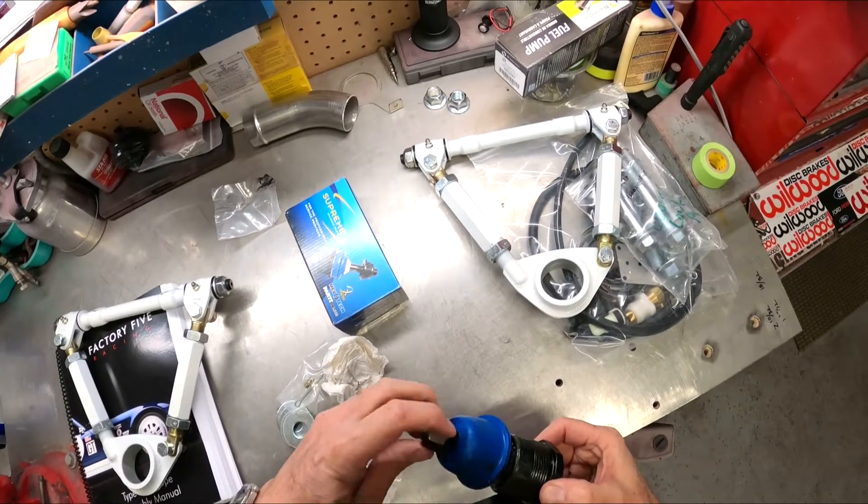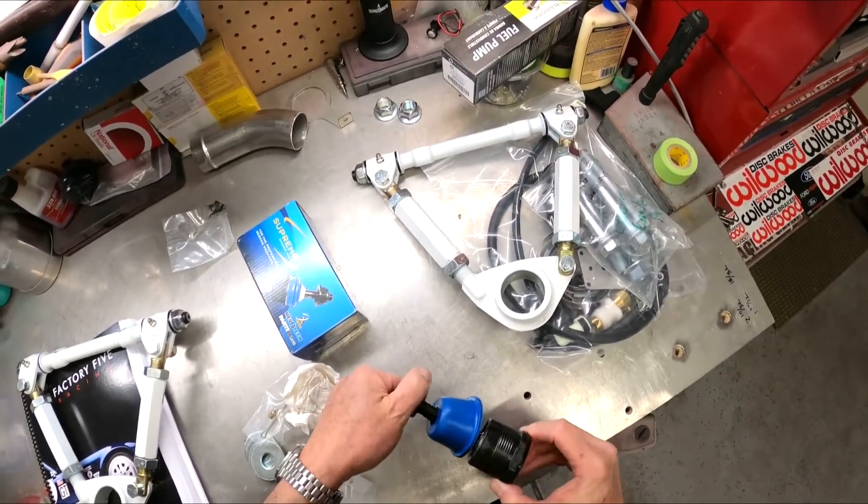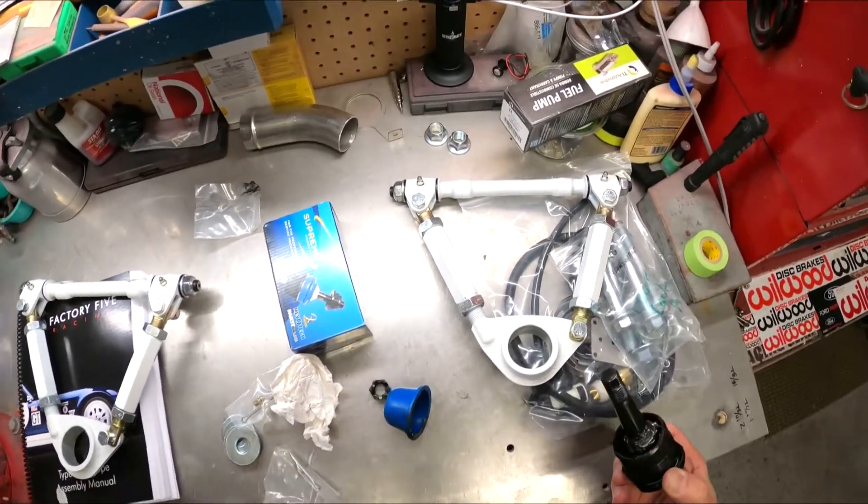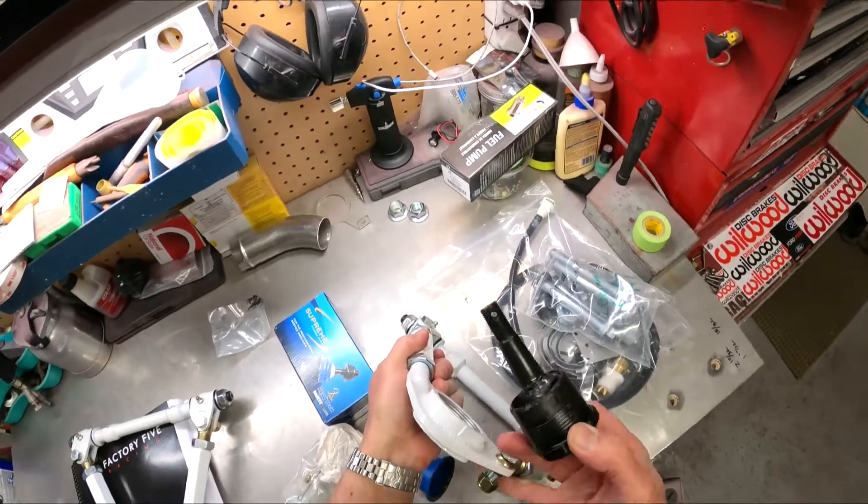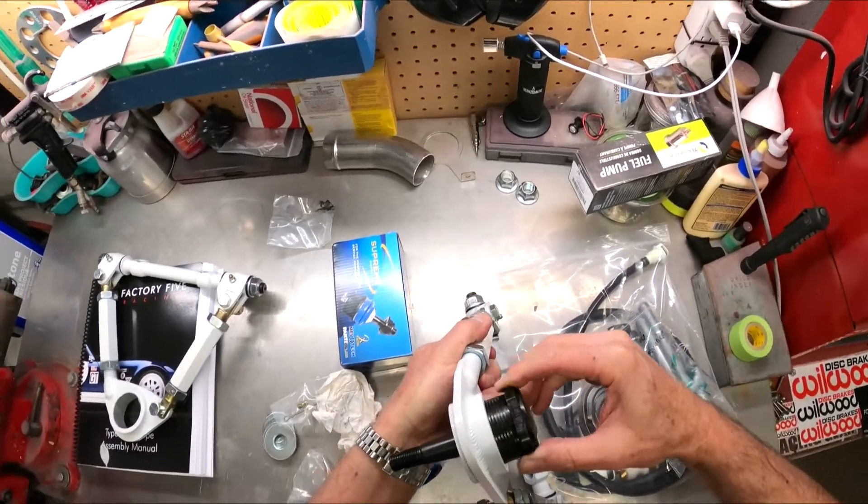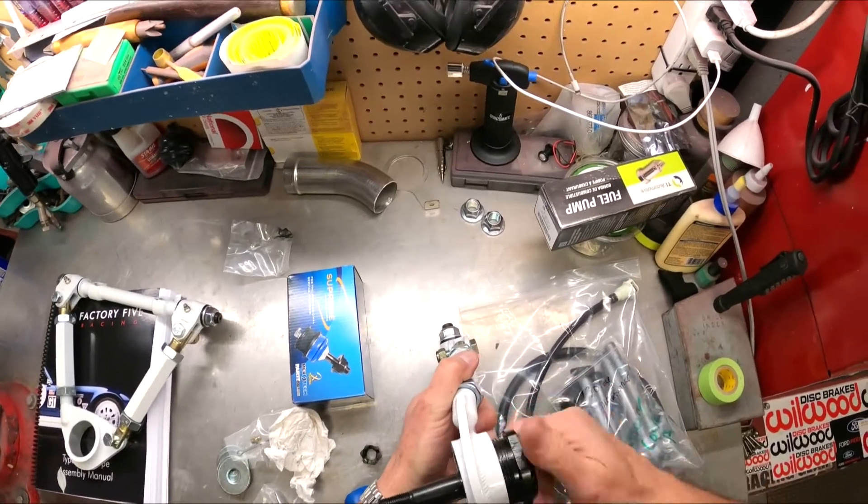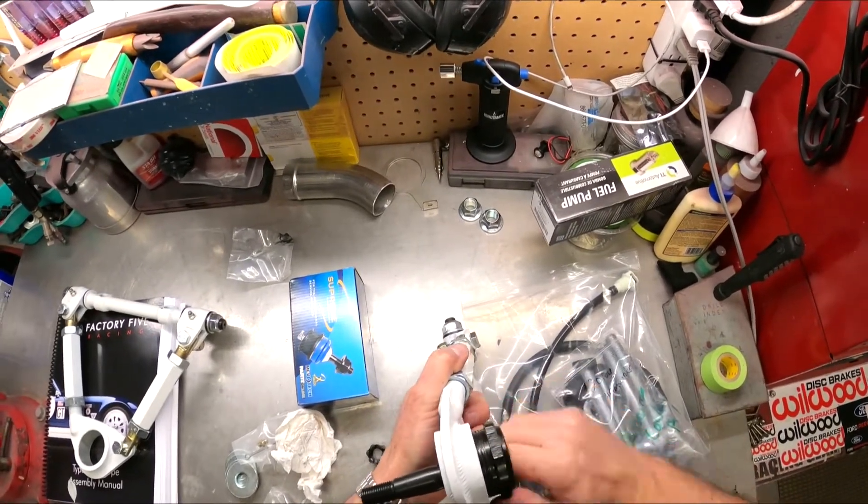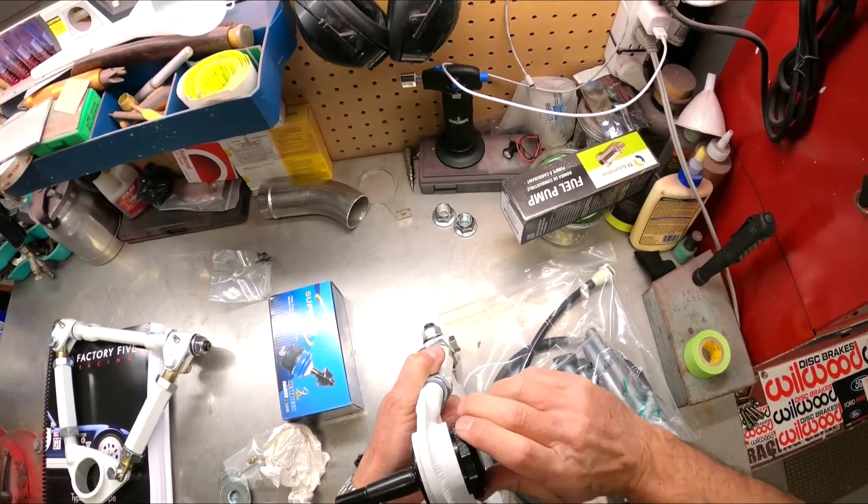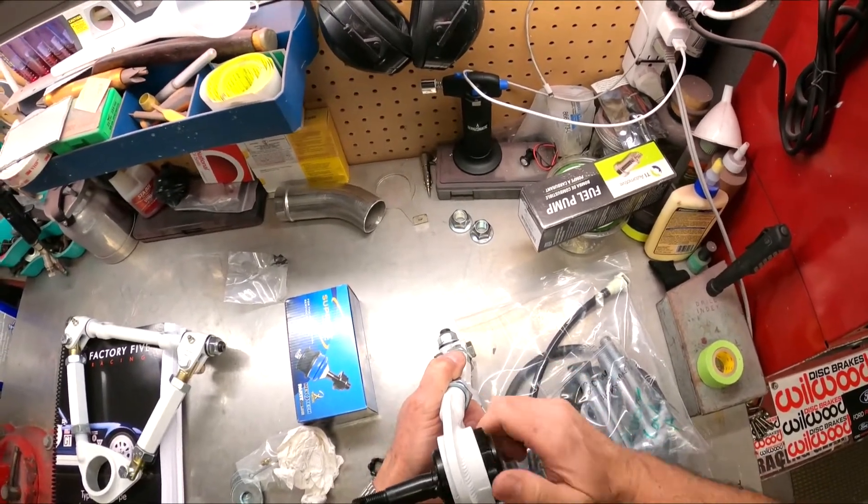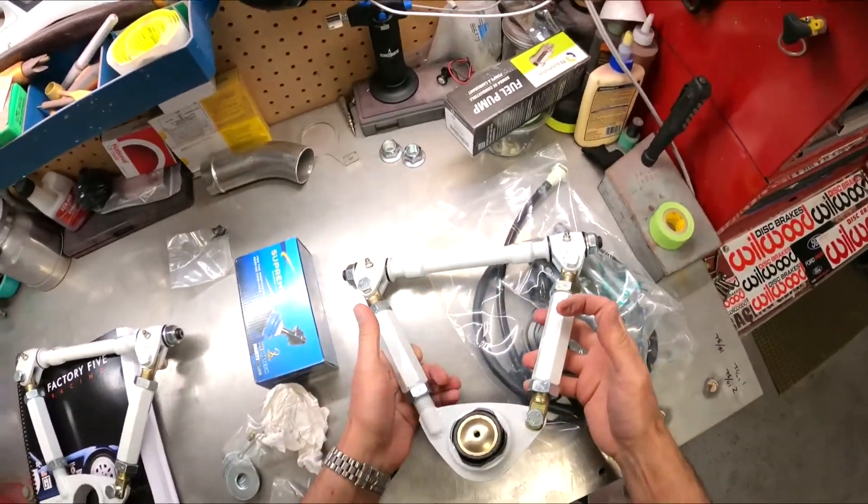I think the easiest way to do this is to pull the boot off. This is going to come down into here because it's going to go outward. I have no issues, that thing just cruised in easy. Look at that, I had no issues there at all. I don't know, maybe I just get lucky.